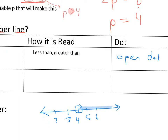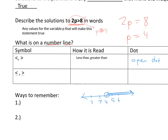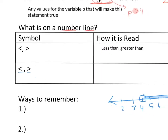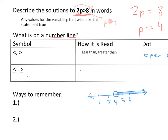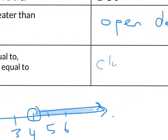To show all solutions greater than 4, we use a ray going in that direction. The symbol we use to represent solutions for inequalities is a number line with a ray. If we add the little line underneath — less than or equal to, or greater than or equal to — the ray direction stays the same, but now we close the dot and fill it in.